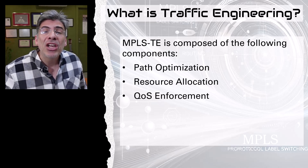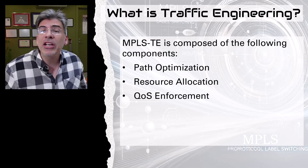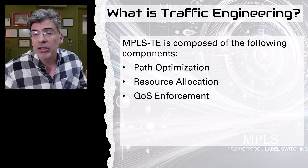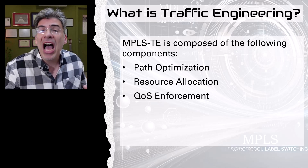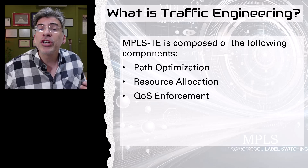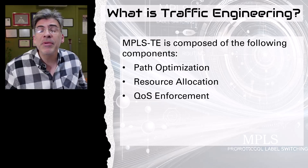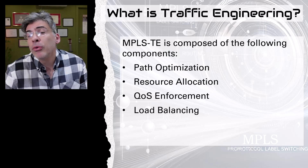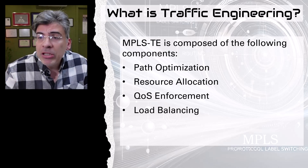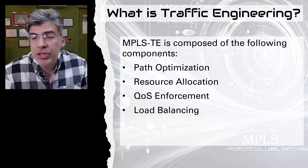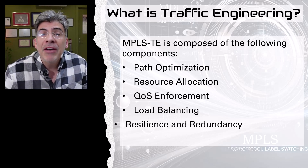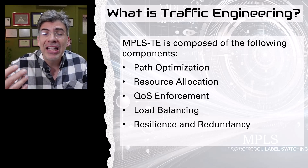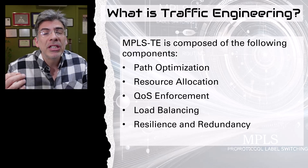The third component is quality of service enforcement, where TE is used to prioritize certain types of traffic — for example, voice, video, or traffic belonging to particular customers — to meet latency, jitter, packet loss, and other required network thresholds, all typically defined within network SLAs. Then we have load balancing, where traffic is distributed over multiple links or paths to achieve better infrastructure usage while preventing the overloading of a single resource. Finally, resilience and redundancy — TE can reroute traffic automatically in case of a link or node failure, ensuring minimal disruption.